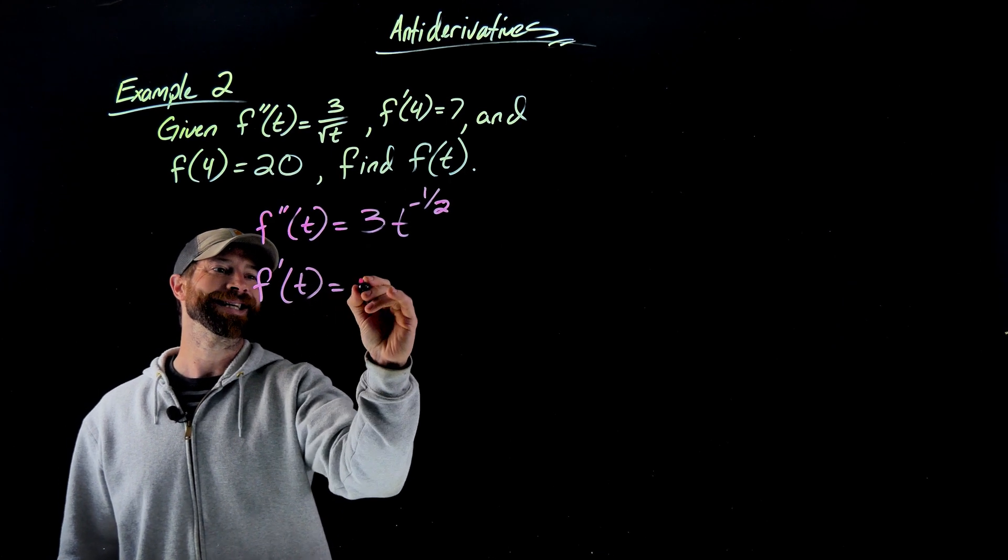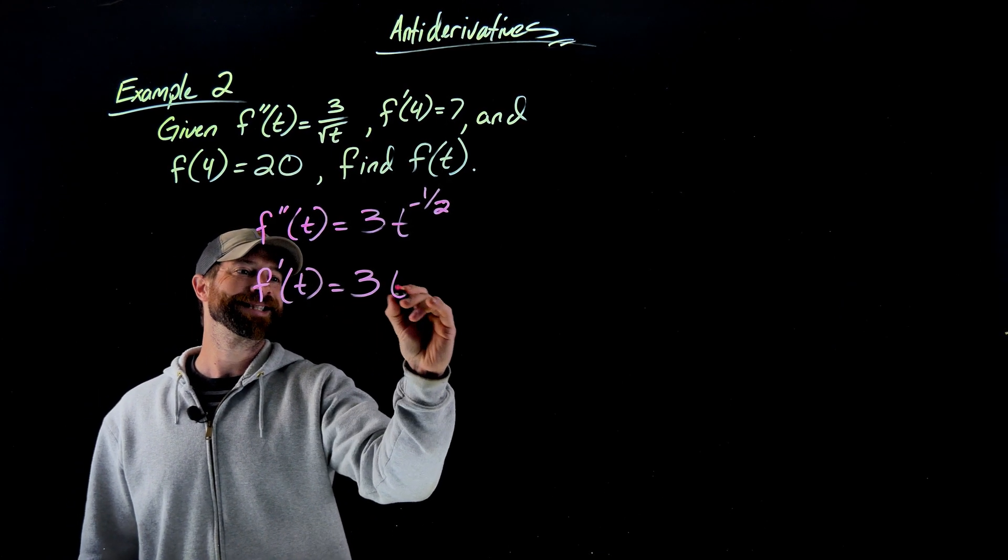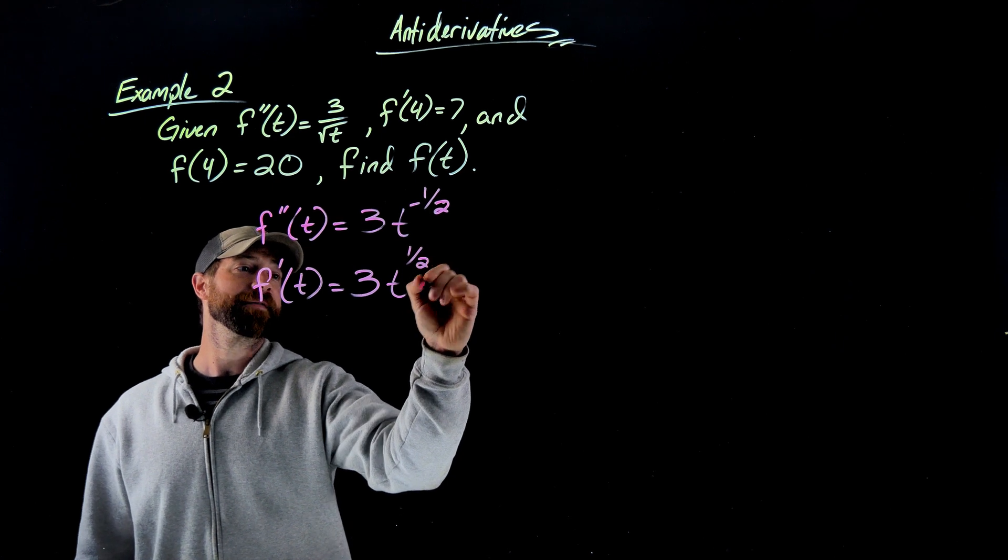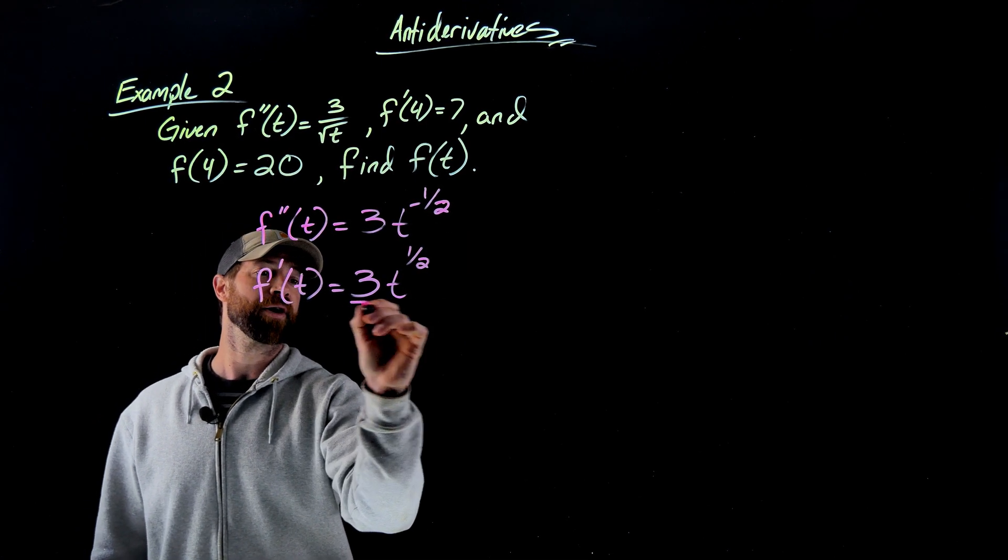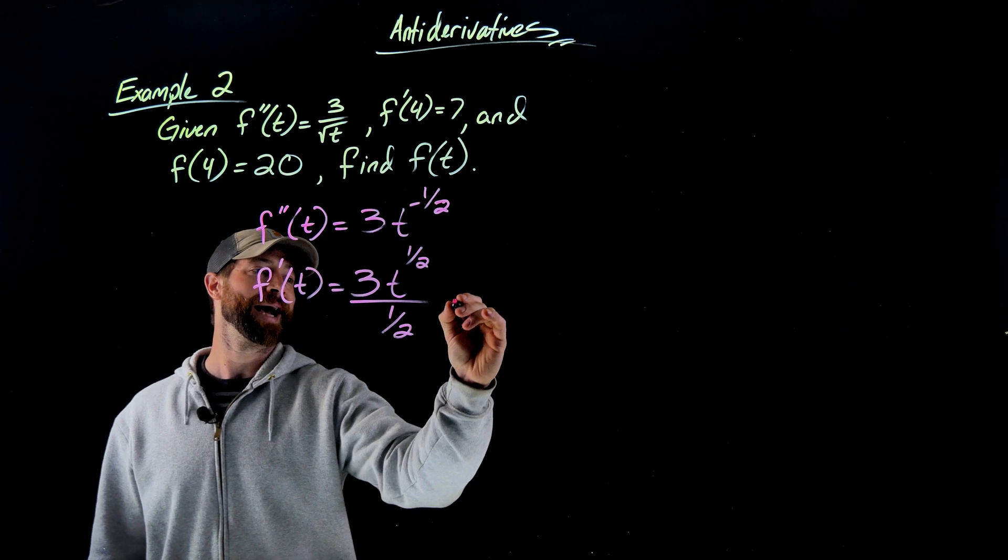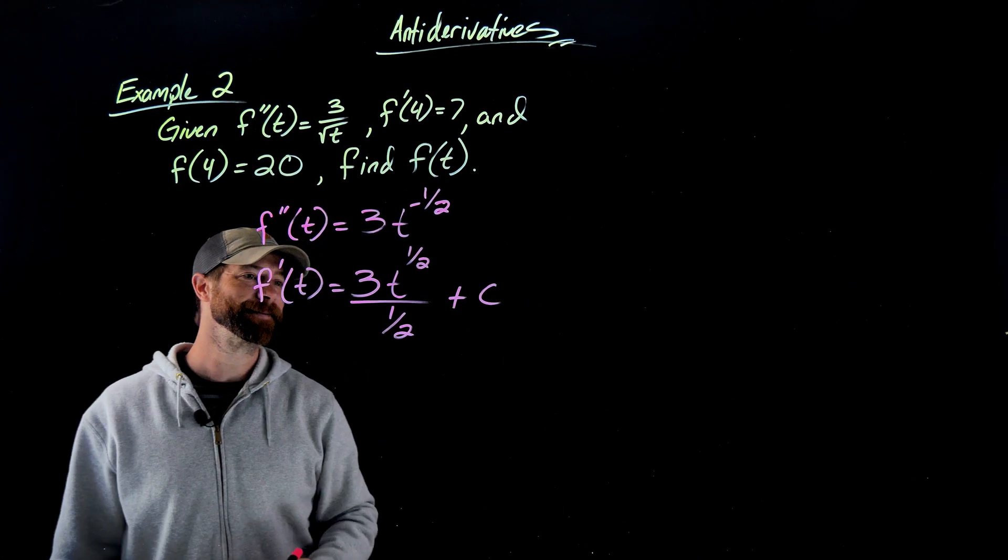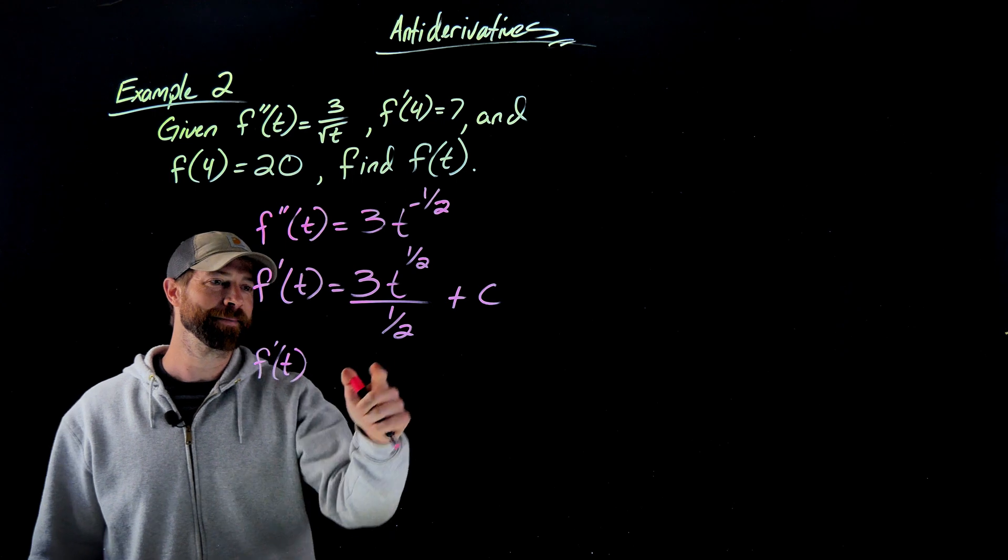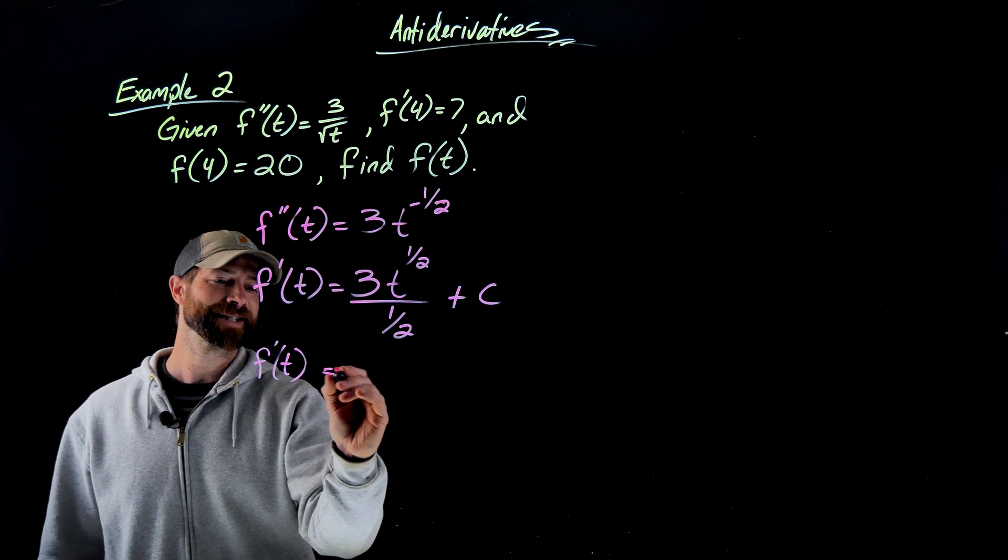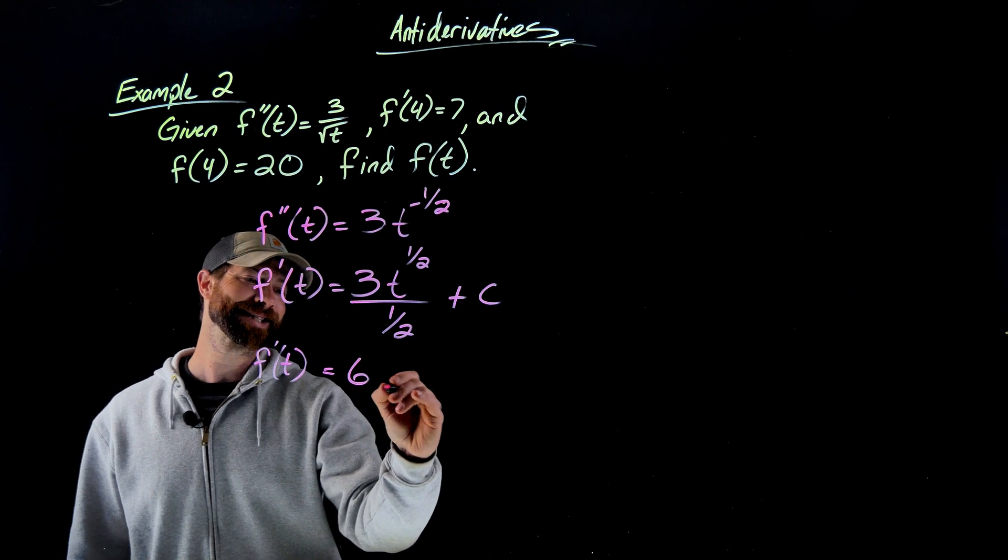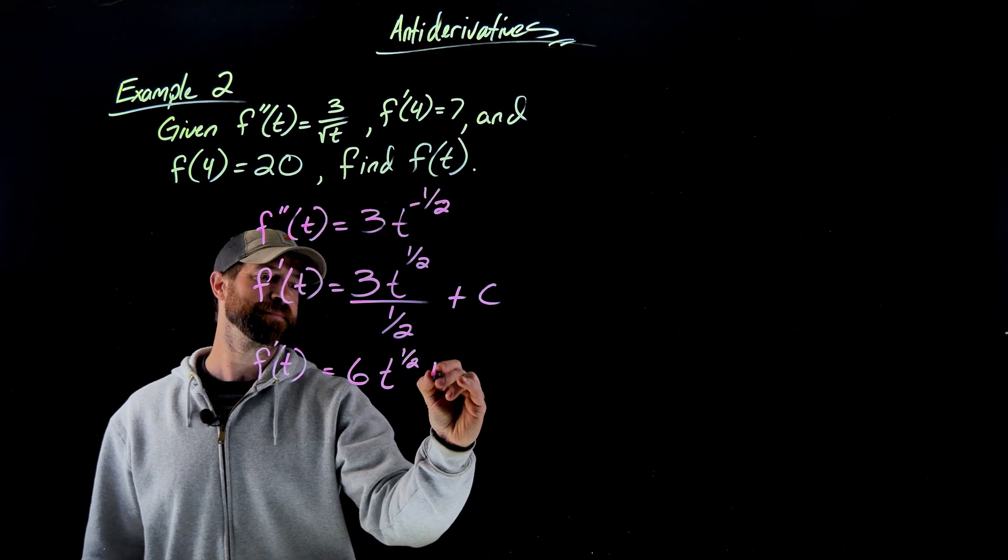So f prime of t is going to be 3 times t to the 1 half. I get 1 half because I added 1 to this exponent right here. But I also have to divide by 1 half plus c. Importantly here, I need to remember that dividing by 1 half is the same thing as multiplying by 2. So to simplify this, I would get 6t to the 1 half plus c.